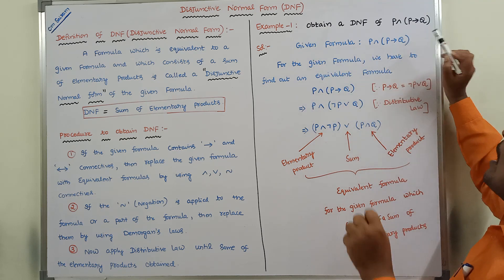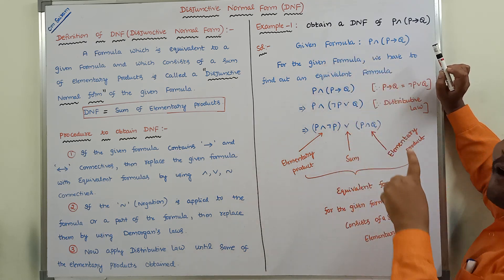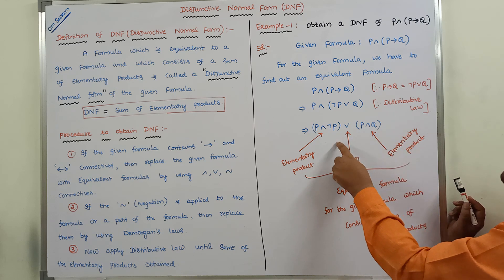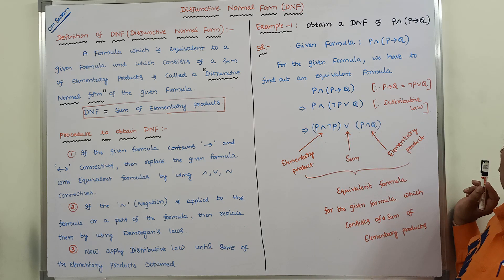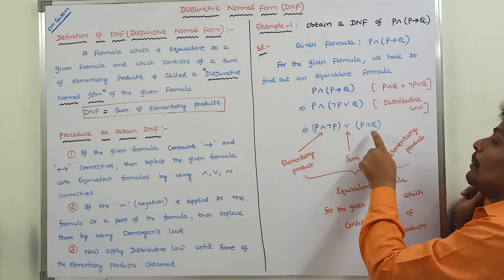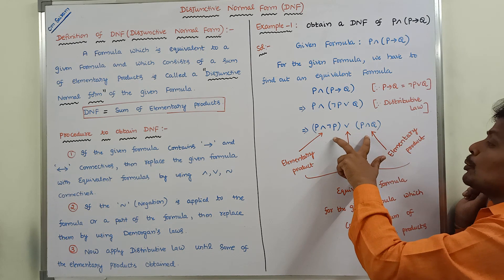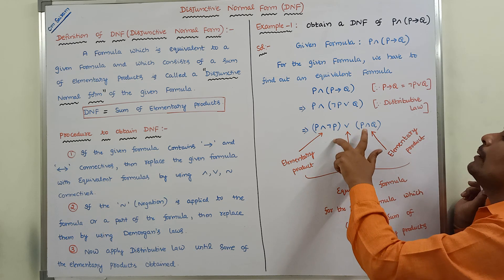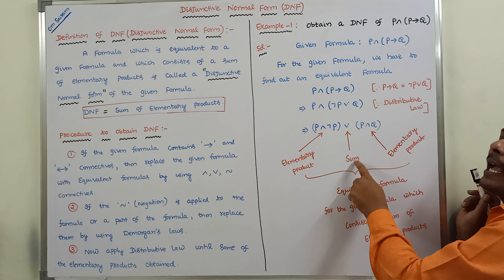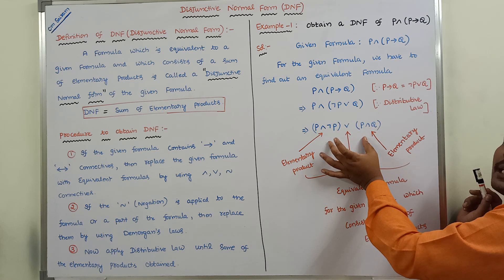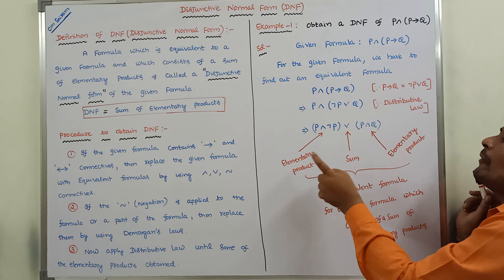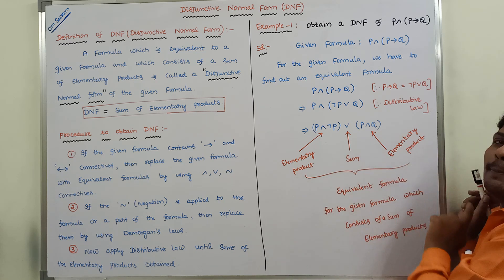This is the given formula. For this given formula, we already find out the equivalent formula. This is the equivalent formula. In this formula, it consists of a sum of elementary products. Here, P ∧ ¬P is one elementary product. P ∧ Q is one elementary product. These two elementary products are combined by using the disjunctive symbol. This disjunctive symbol can be called as sum.